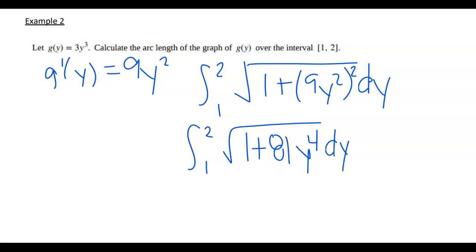So we are just going to use technology to do that. And when you do use technology, you get 21.028. So that might be a TI calculator, it might be Desmos. Either one of those is going to give you this as your arc length of this function over the interval.